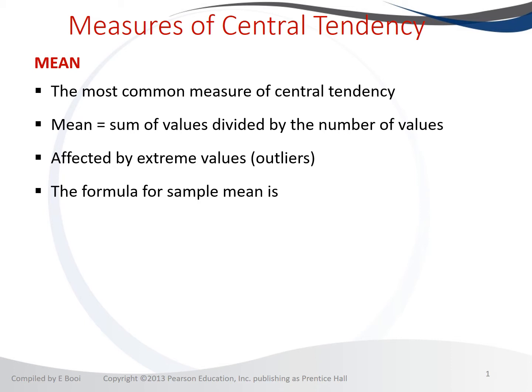When calculating the mean, we need to be aware of two things: we can calculate the mean from the sample or from the population. For the sample mean — which is the statistic — we use the formula: x-bar equals the summation of x_i divided by n, meaning the average is the sum of all values divided by how many there are.